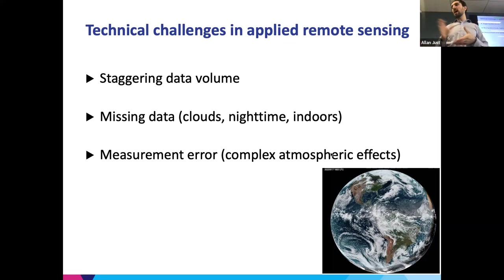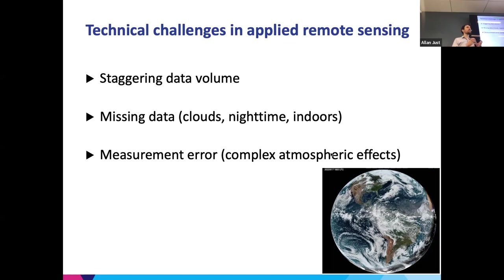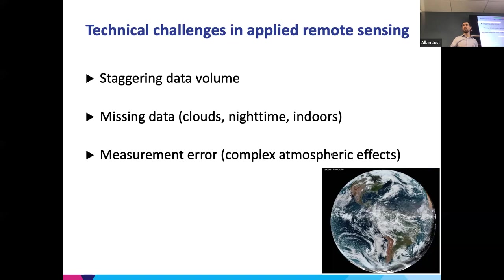One of the other challenges — really almost an earth science challenge — is that there's enormous measurement error. Those products I mentioned, AOD, land surface temperature, and column water vapor, are generated through physics-based algorithms known as retrievals, using the properties of how light scatters or how thermal energy disperses. They're doing their best to infer what the truth is, but these are really indirect observations. They're themselves noisy, and they're not measuring directly the quantities we're most interested in.